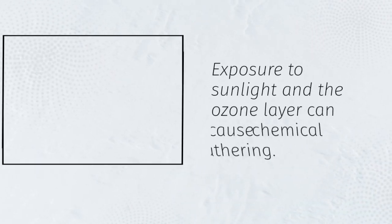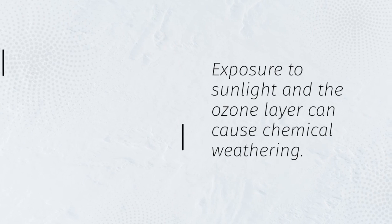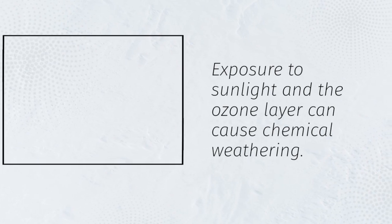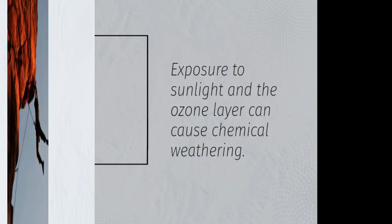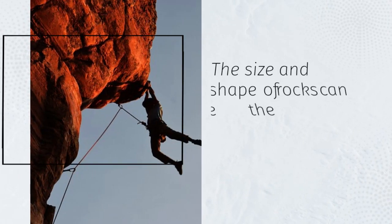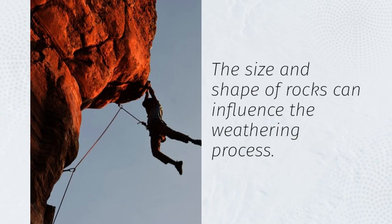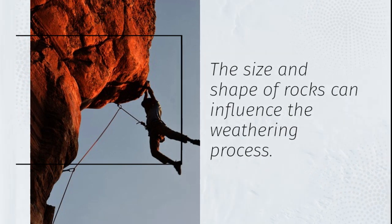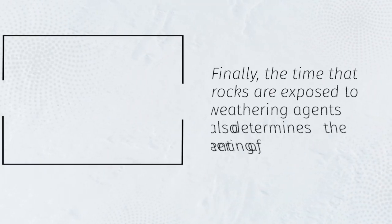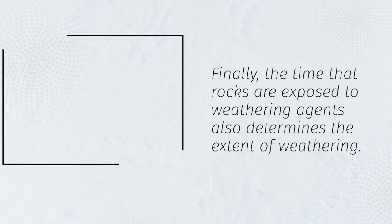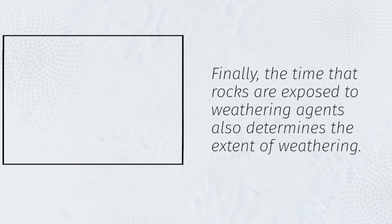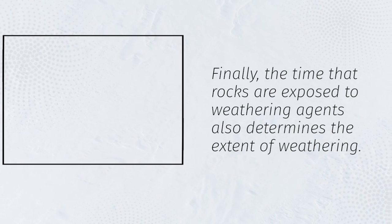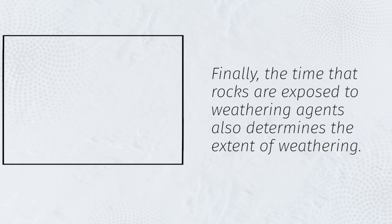Exposure to sunlight and the ozone layer can cause chemical weathering. The size and shape of rocks can influence the weathering process. Finally, the time that rocks are exposed to weathering agents also determines the extent of weathering.